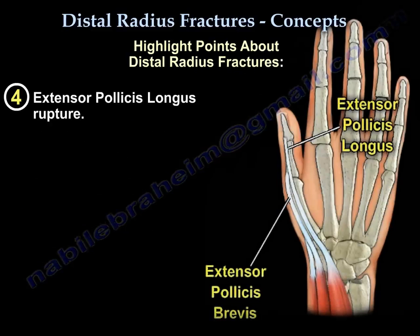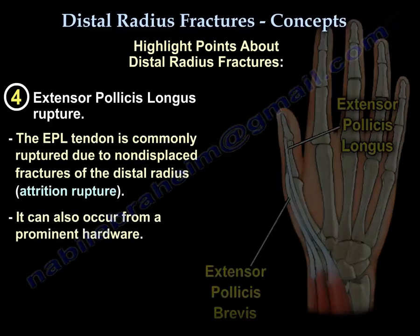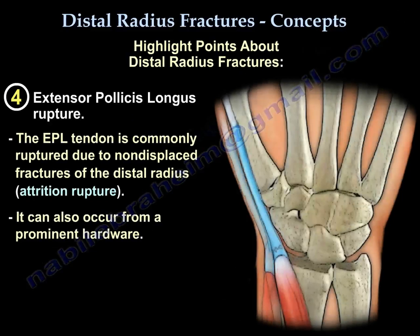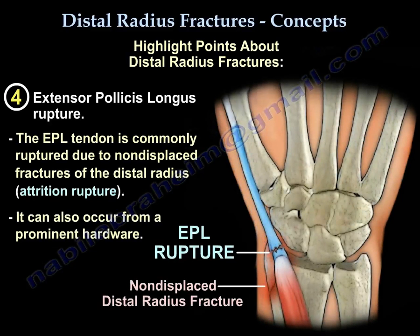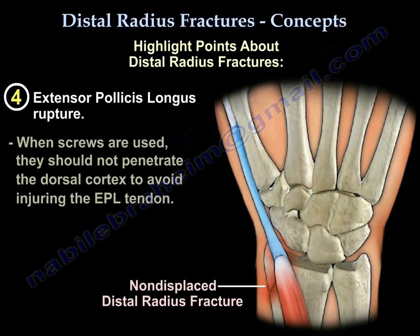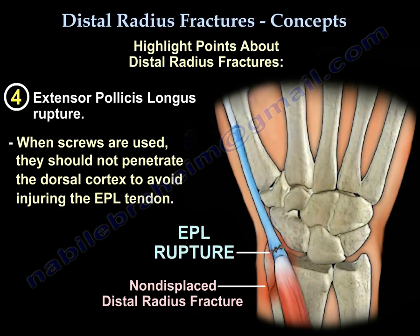Extensor pollicis longus rupture. The extensor pollicis longus tendon is commonly ruptured due to a non-displaced fracture of the distal radius — this is called an attrition rupture. It can also occur from prominent hardware. When screws are used in the plate, they should not penetrate the dorsal cortex to avoid injury to the extensor pollicis longus tendon.